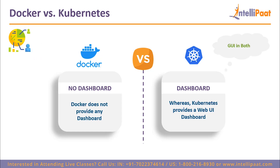Another parameter is the GUI — graphical user interface. Docker does not provide any dashboard or GUI. Kubernetes, on the other hand, does provide a GUI in the shape of a web-based UI dashboard, where you can see all the stats of your ongoing tasks in Kubernetes.